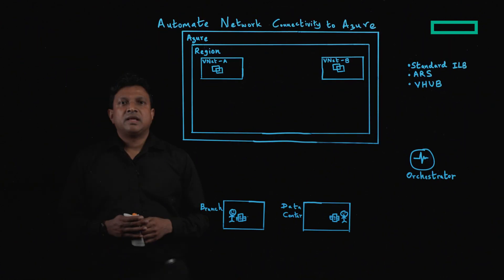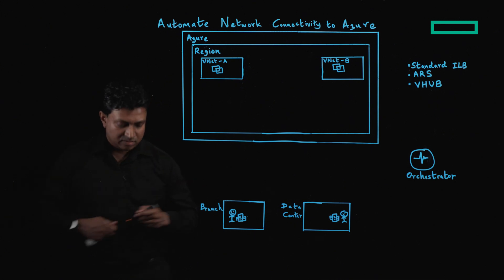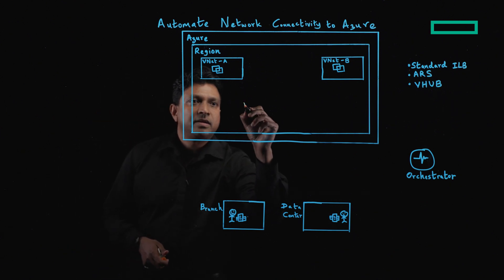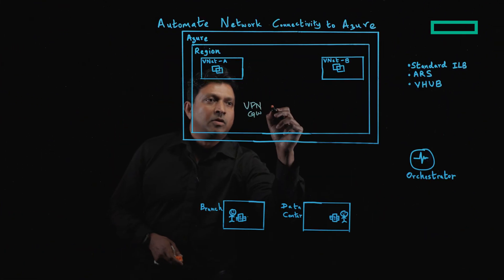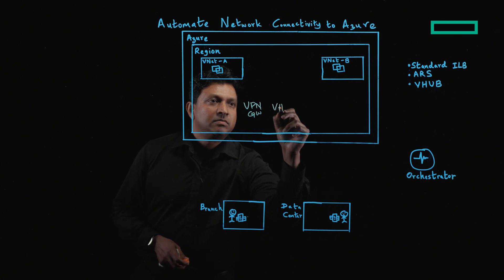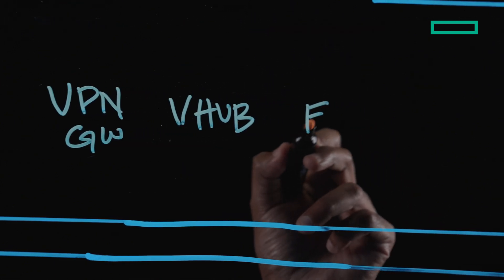To start with, let's talk about a few challenges that enterprises face when trying to connect on-prem networks with Azure. Typically, when an enterprise wants to connect an on-prem network with Azure, they start with either a VPN gateway, a virtual WAN hub, or an ExpressRoute gateway.